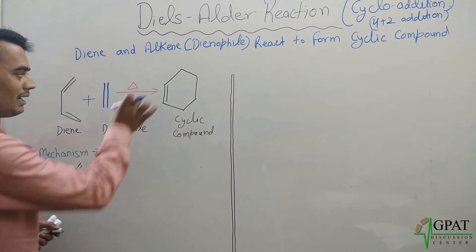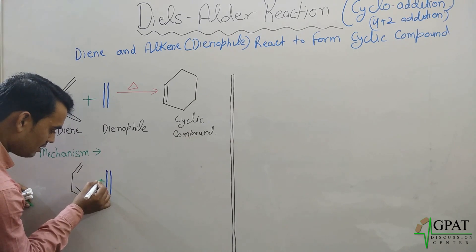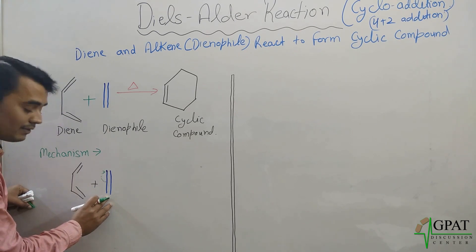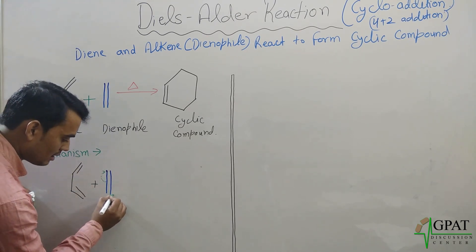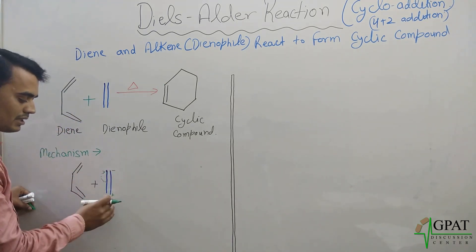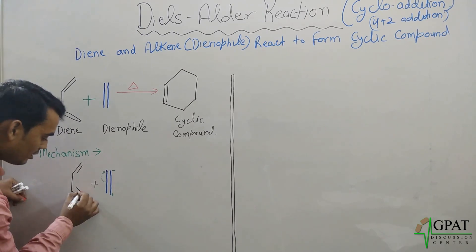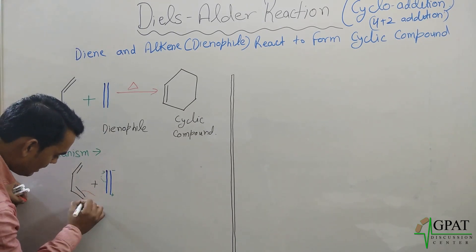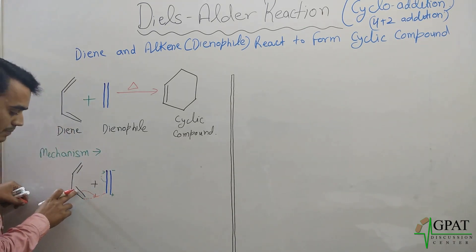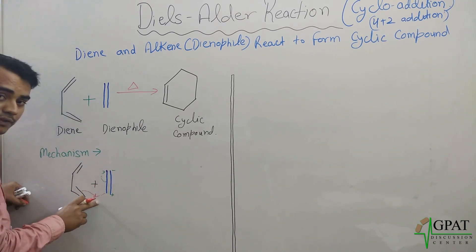But at high temperature, these pi bonds will be shifted. The pi bond will be shifted towards a carbon, meaning that carbon will acquire some negative charge while another carbon gets a positive charge. Then this pi bond shifts and forms a new sigma bond with this carbon — the pi bond shifts here and forms a sigma bond.